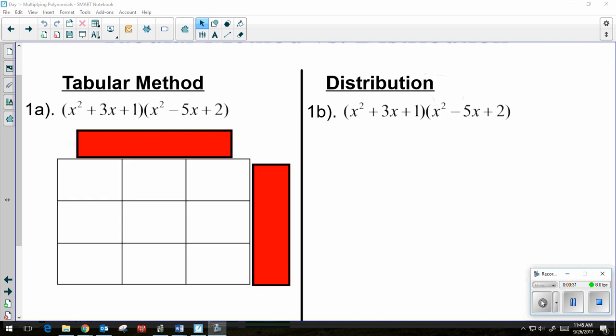So if I'm using the box method, I need to have a box for each term. Because I have a trinomial times a trinomial, it's going to be a 3x3 box.